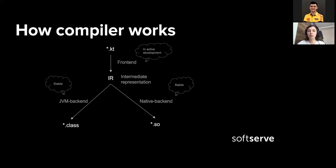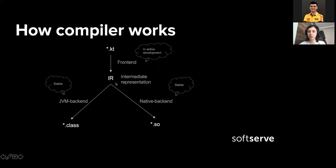The JVM compiler was working in a slightly different way, and the Kotlin team decided to update it. They are moving all the code analysis into the frontend to detect updates across different language targets and make the compiler faster. The Kotlin compiler is not so fast yet, and they're going to present the improvements in the new version of Kotlin — so it's in active development.